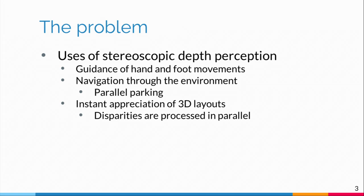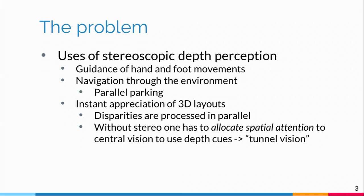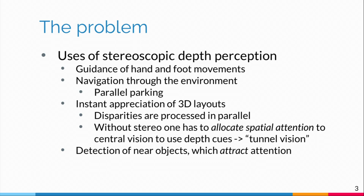That's because binocular disparities are processed in parallel — you measure binocular disparities at every part of the visual field simultaneously. One consequence is that without stereo vision, you have to allocate spatial attention to central vision in order to use depth cues. The world is rich with depth cues — there are other ways to see depth besides stereo — but they take a lot of attention. If you don't have stereo to process depth in parallel throughout the visual field, you have to concentrate on what you're looking at to determine which thing is in front. There are occlusion cues, motion parallax cues, and shadow cues, but you have to use visual attention to extract that information, and it leads to tunnel vision.